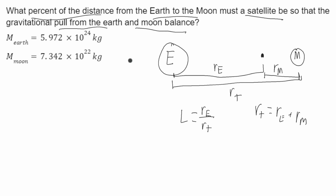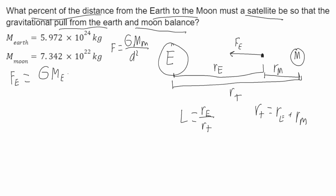Now I can write some force equations. The force from gravity is equal to G, which is a constant, times the mass of the large object, times the mass of the small object, all over the distance between them squared. For the Earth, I'll call this FE. This is going to be equal to G times the mass of the Earth, times the mass of the satellite, over RE squared.